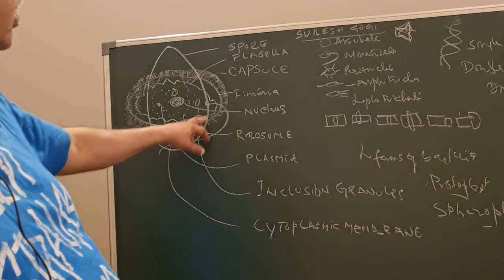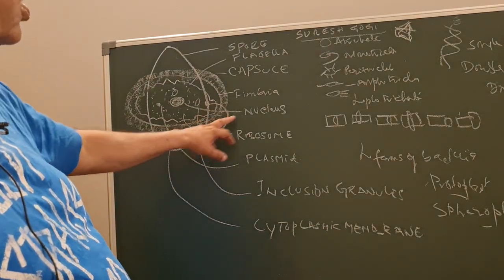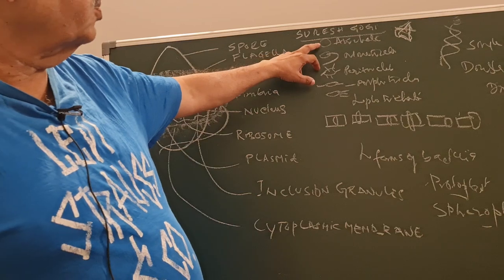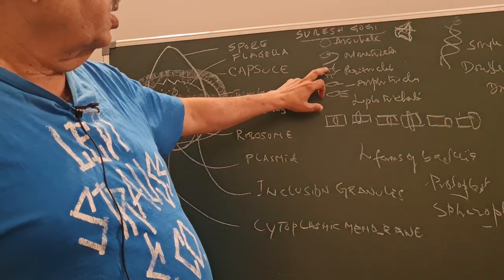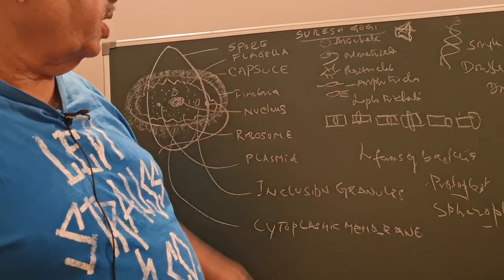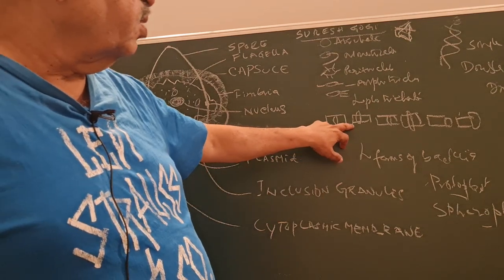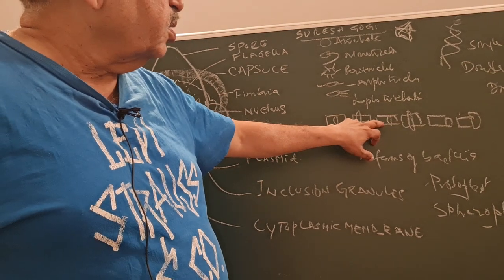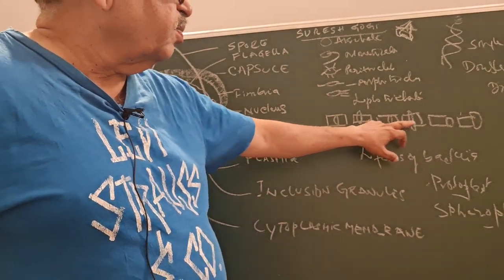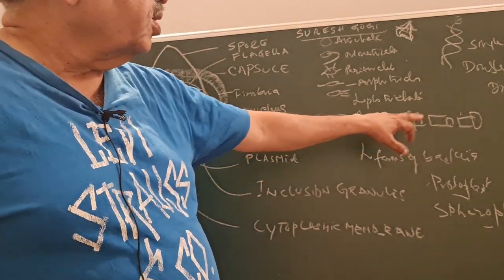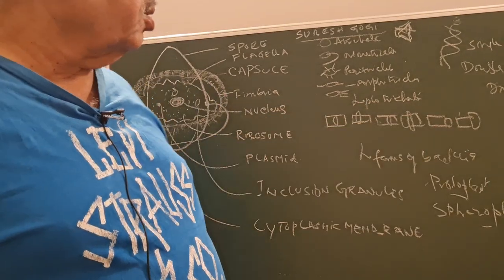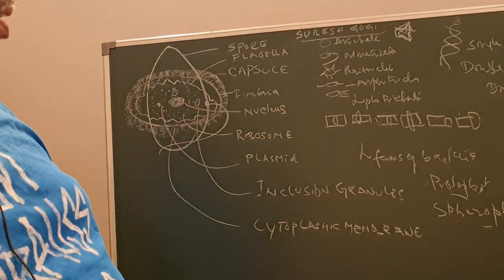Flagella is an organ of locomotion. Depending on the arrangement of flagella, they are classified as atrichate, monotrichate, peritrichate, amphitrichate, and lophotrichate. Depending on the arrangement of spores: central non-bulging, central bulging, subterminal bulging, and terminal bulging.